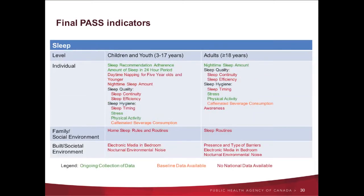Finally, we're on to the sleep indicators. Traditionally, data collection on sleep was centred on sleep amount and sleep disorders such as sleep apnea. Through PASS, the agency is aiming to increase reporting to include other components of sleep such as napping and sleep quality, as well as the various behavioural and environmental factors that can impact a good night's sleep. Examples include sleep hygiene — behaviours like the time they go to bed, stress levels, physical activity, and caffeine consumption — as well as parental practices in the home, electronic media in the bedroom, and levels of environmental noise at night.